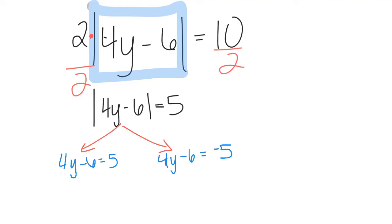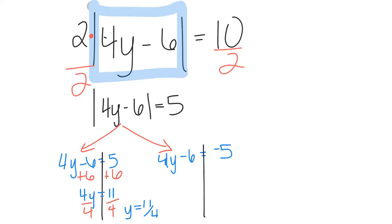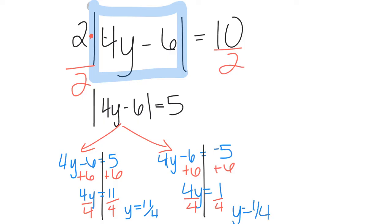Solving each equation: adding 6 gives 4y = 11, so y = 11/4. For the second equation, adding 6 gives 4y = 1, so y = 1/4. Our two answers are positive 11/4 and positive 1/4.